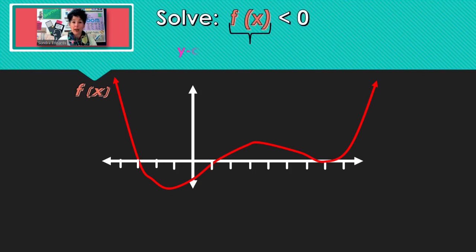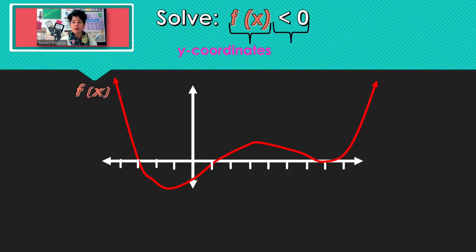Numbers that are less than 0, smaller than 0, are negative numbers. So our solution is going to be all the x's that generate y-coordinates that are negative.